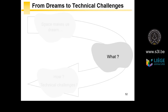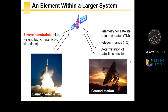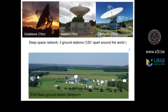What is a satellite? A satellite is just an element within a large system. First, you need to launch it, and many constraints come from the launch vehicle — the size, weight, launch site, orbit, and vibrations your satellite must bear. After launch, your satellite works in orbit and you need to get in touch with it via a ground antenna — the ground station. You can send telecommands (TC) and receive data from the satellite. According to the type of communications needed, you must use the right ground stations.